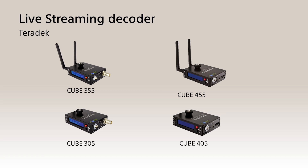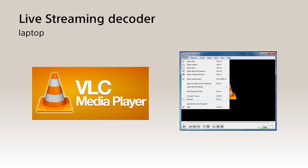To decode live streaming, you will need a decoder which converts the data to a video output. Sony has been working with Teradek, and we have tested 4 devices which can decode live streaming transmitted from Sony's camcorders. It is also possible to use a laptop computer for viewing the live streaming. A free software called VLC Media Player can decode the streaming and output the video if the computer has an HDMI interface.